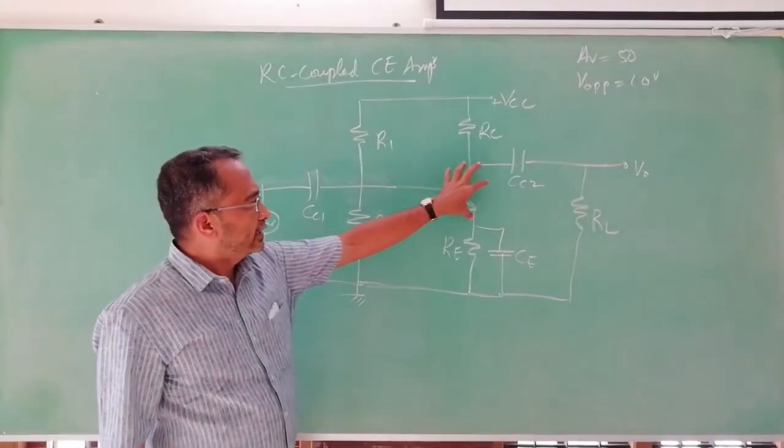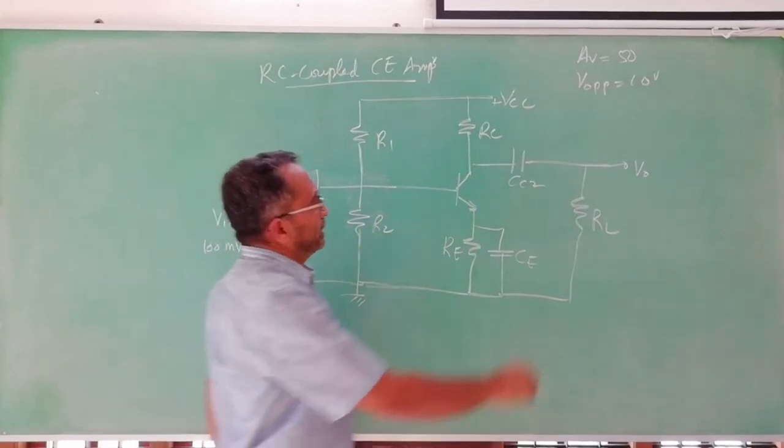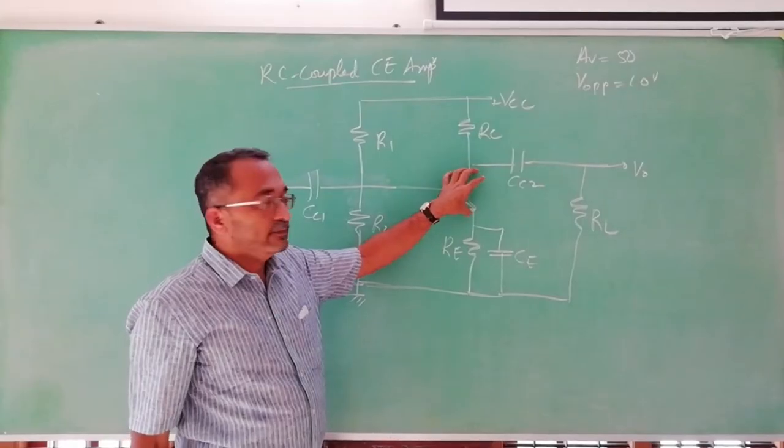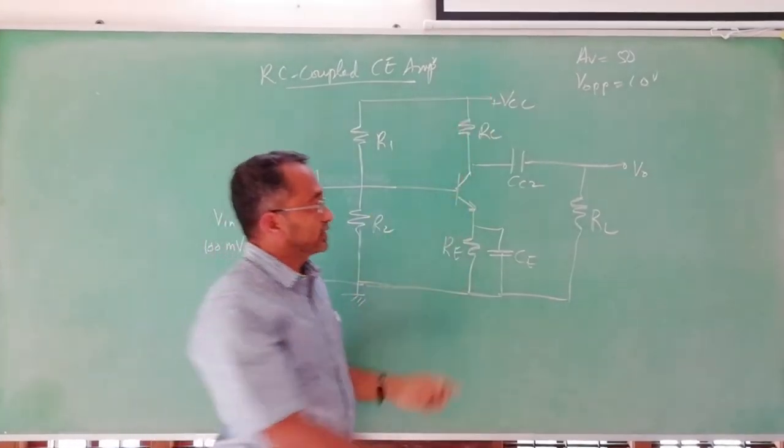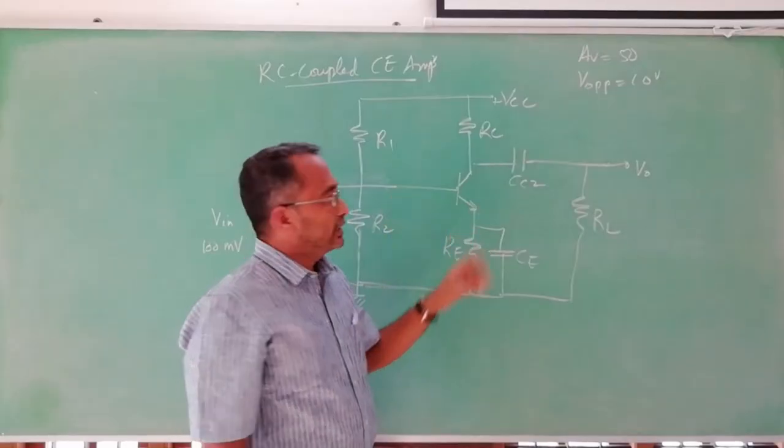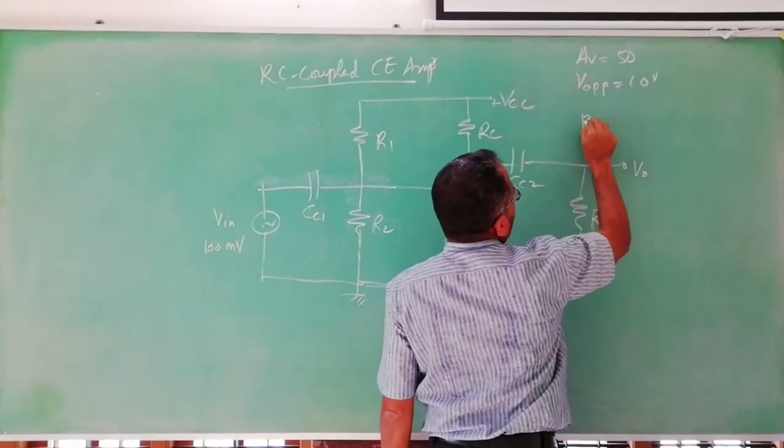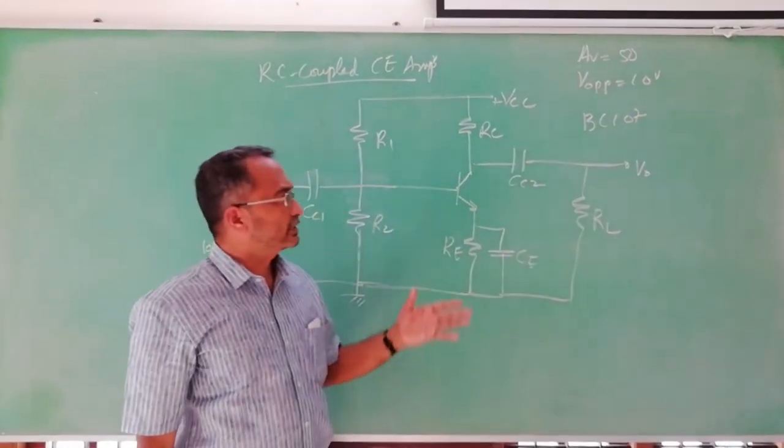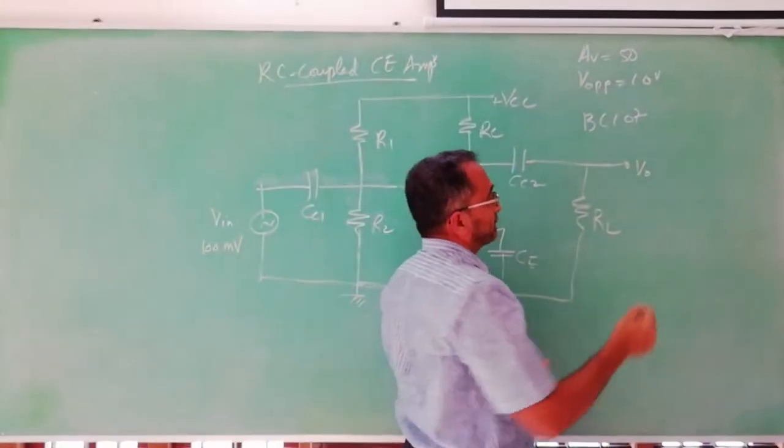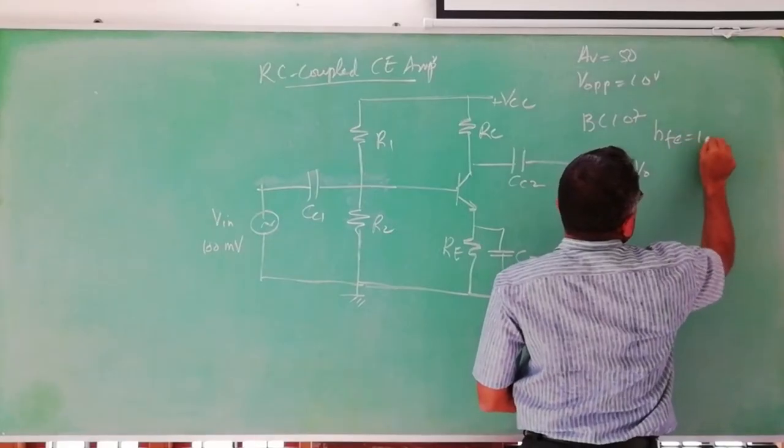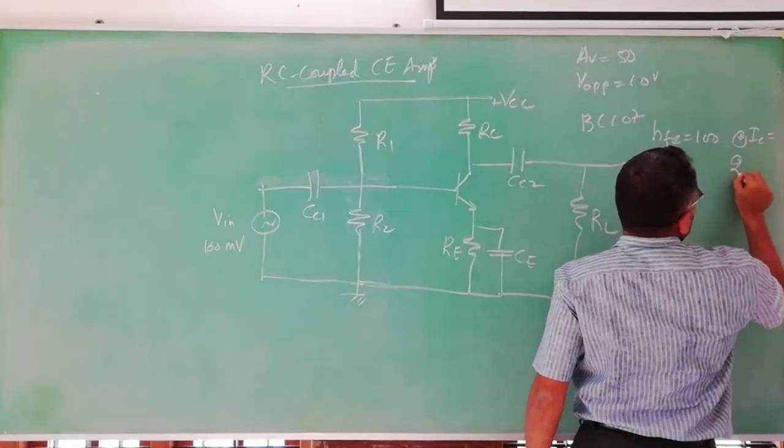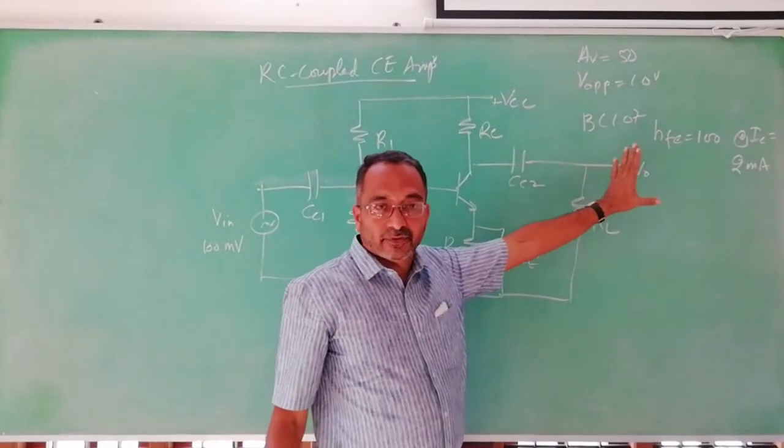First thing is to select the discrete active device transistor. Required AV voltage gain is 50, so the transistor when you select, the HFE of that transistor should have at least that gain. So we shall select one transistor, NPN transistor, low signal amplifier. For that purpose we shall take BC107. BC107 can be selected for this particular application because its HFE from your data sheet when you verify you will find HFE is 100 minimum, maximum may be 400 or 500. But it is specified at the rate of IC equal to 2 milliampere. So at 2 milliampere that HFE is guaranteed. That is an important data for us to design this circuit.